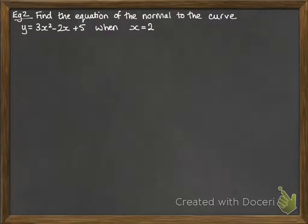This one we're going to find the equation of the normal. Remember that the gradient of the normal is the negative reciprocal of the gradient of the tangent to the curve. If we differentiate y, we'll get 6x minus 2. When x equals 2...